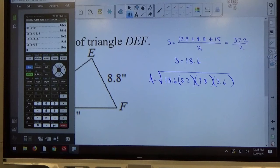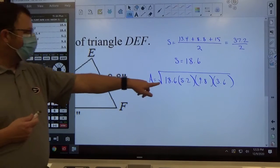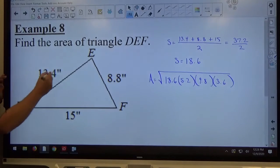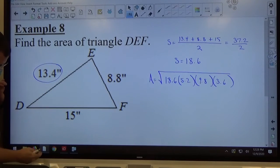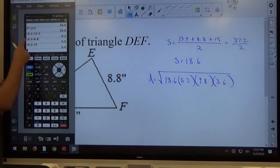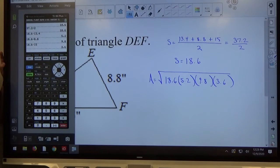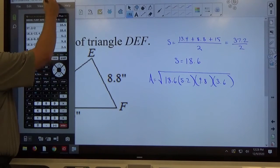Where'd you get 5? This one, 5.2. This side's 13.4. 18.6 minus 13.4 is 5.2. Again, that's the formula, that's how the formula works.